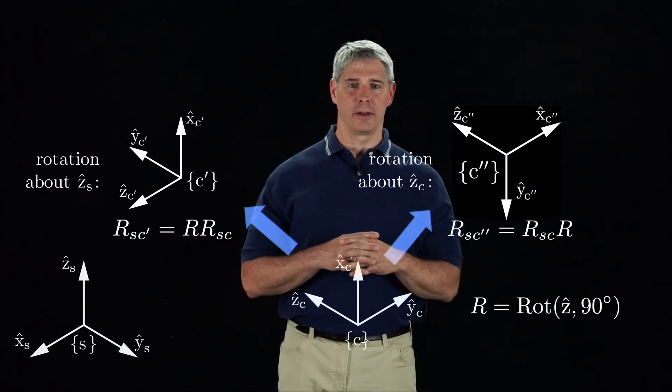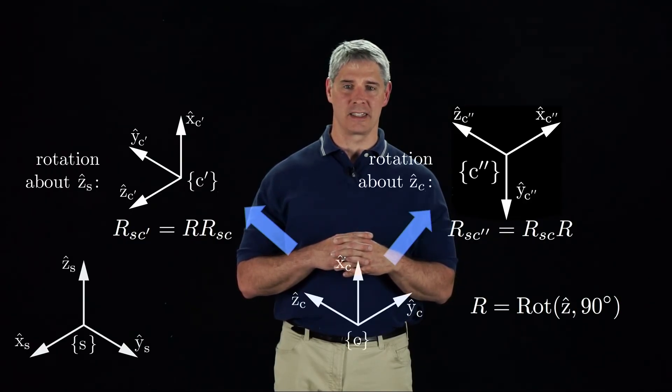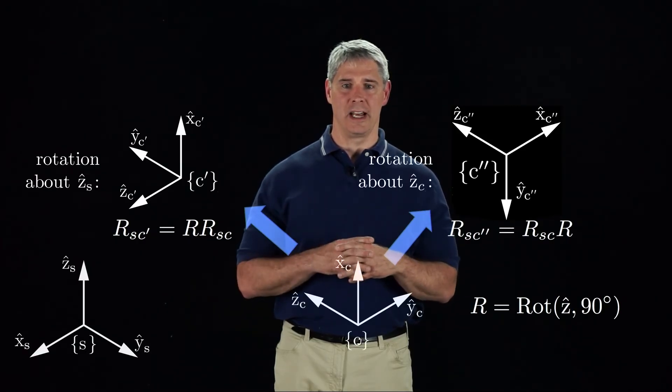If you post-multiply by R, the rotation axis is interpreted as the Z axis of the frame of the second subscript, C. You end up with a different rotated frame, C double prime, still expressed in S.